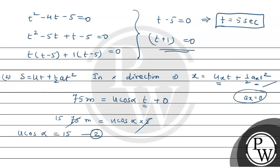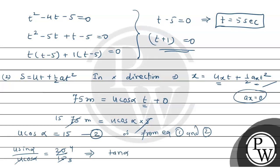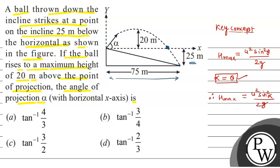From equations 1 and 2: u·sinα / u·cosα = 20/15 = 4/3. The u's cancel, so tanα = 4/3. Therefore α = tan⁻¹(4/3). Looking at the options, this is option A, which is the right answer. I hope you understood it well. Best of luck, thank you.